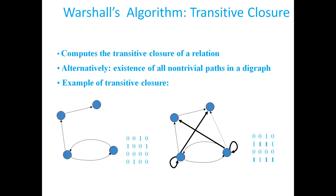Let us start our discussion with Warshall's algorithm. The basic idea is: given a directed graph, we are interested to find out if there is a path from one vertex to another, and then from that vertex to yet another — is there a path from the source vertex to that final vertex? For example, if we have a path from 1 to 2 and 2 to 3, then can we reach from 1 to 3? That is what Warshall's algorithm determines — it finds out the transitive closure.